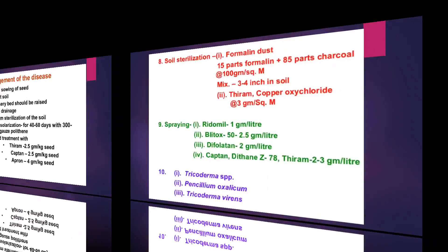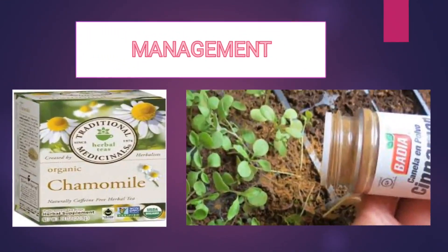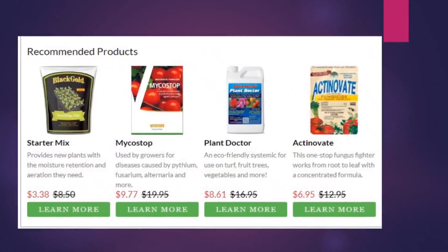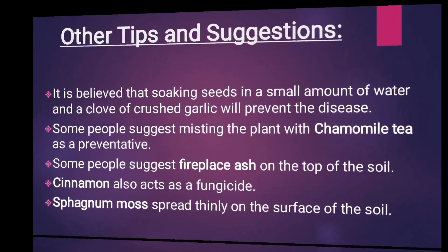Other management practices include soil solarization and seed treatment — we can treat our seeds before sowing so that we can avoid the disease. Other practices include soil sterilization and so on. Chamomile acts as a natural reducer for disease management. Here are the products we can use to cope with disease management, and here are some do's and don'ts and tips for controlling damping-off disease, including sterilization and cleaning of the container.